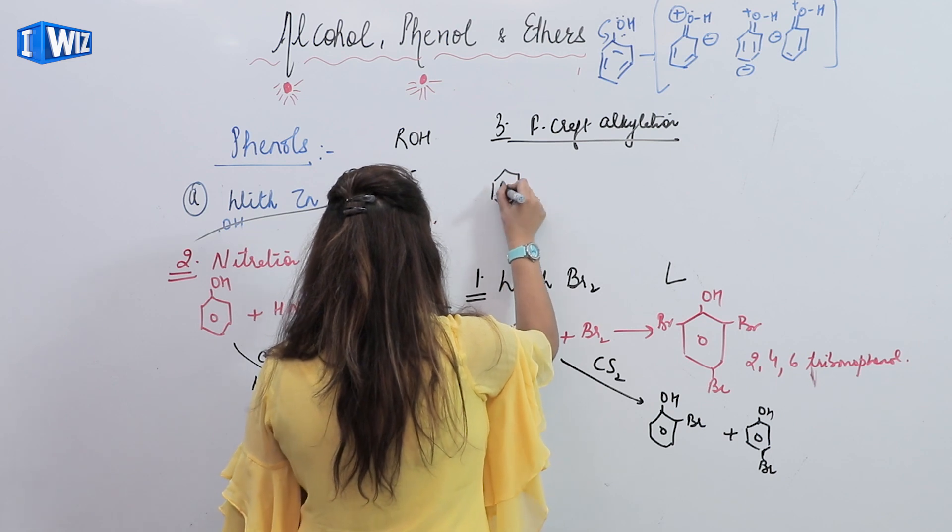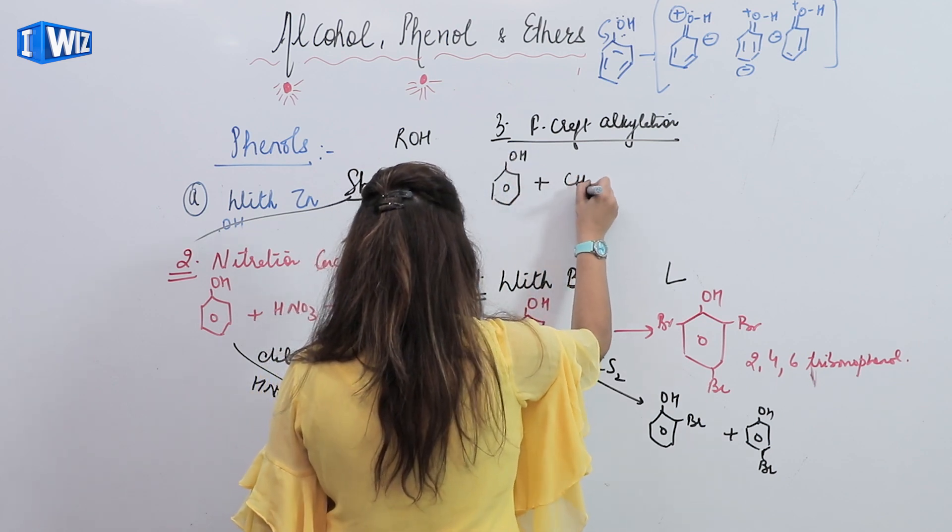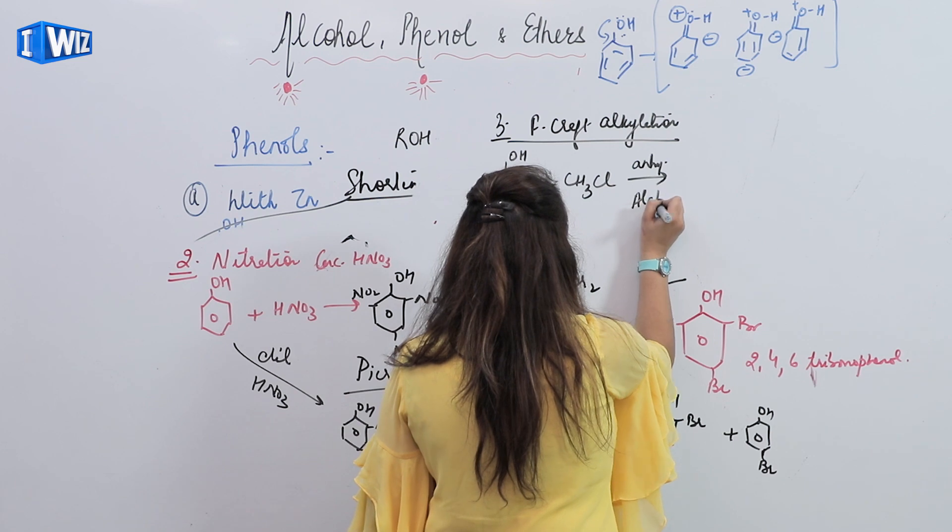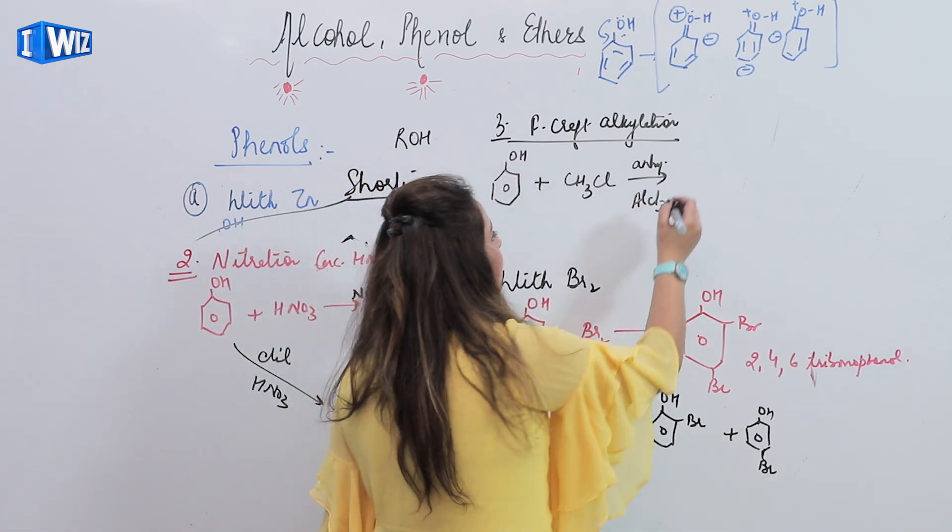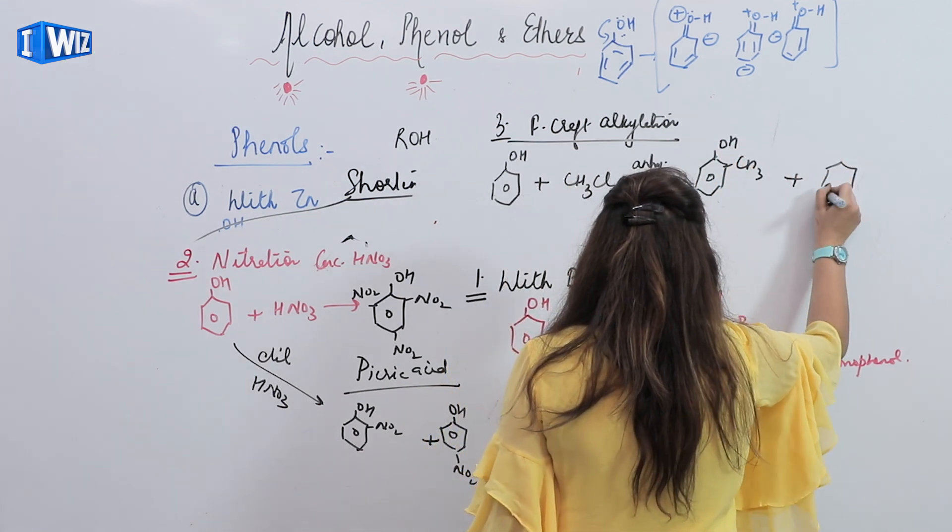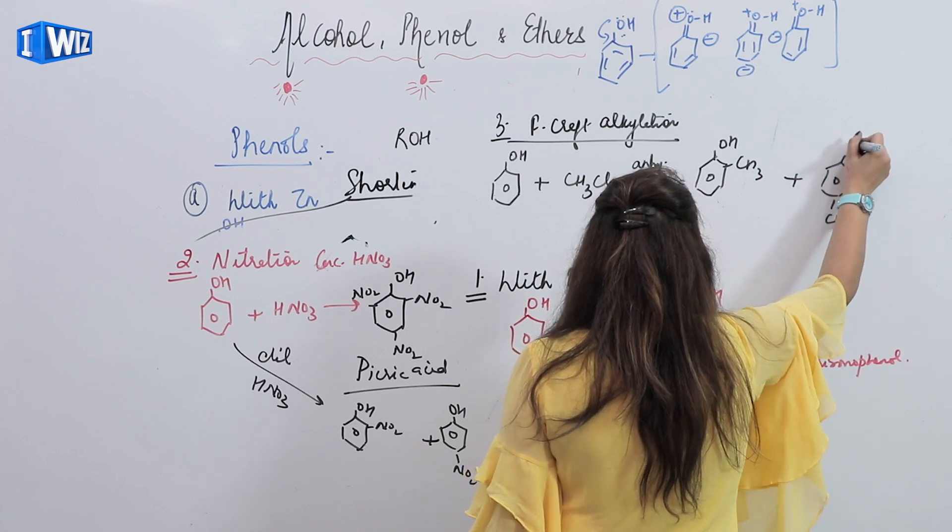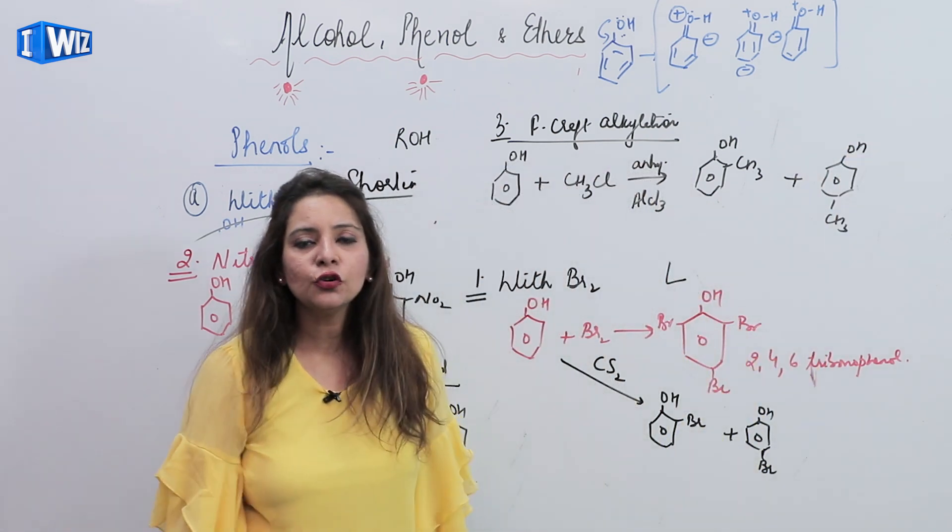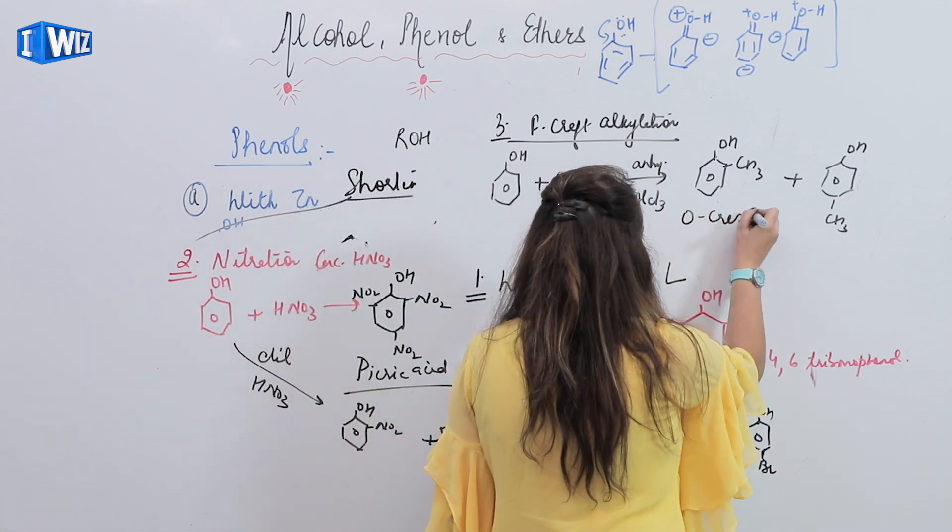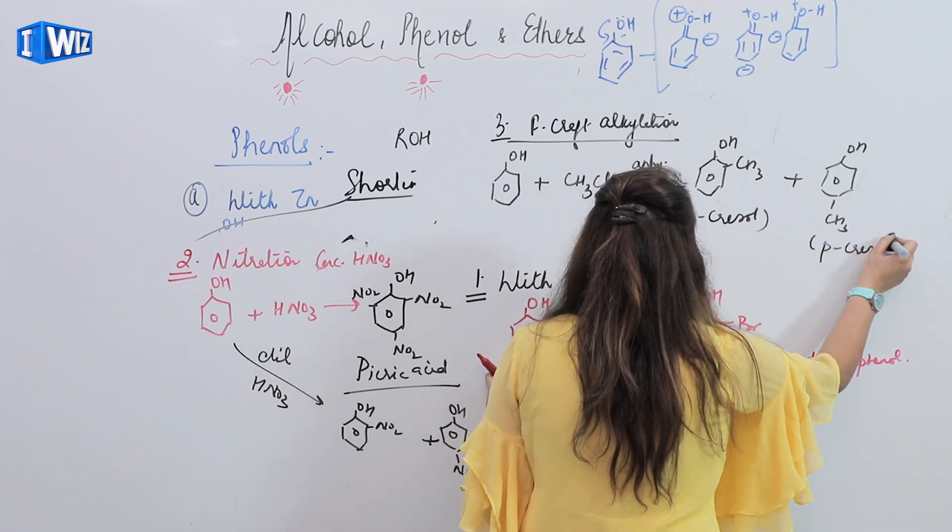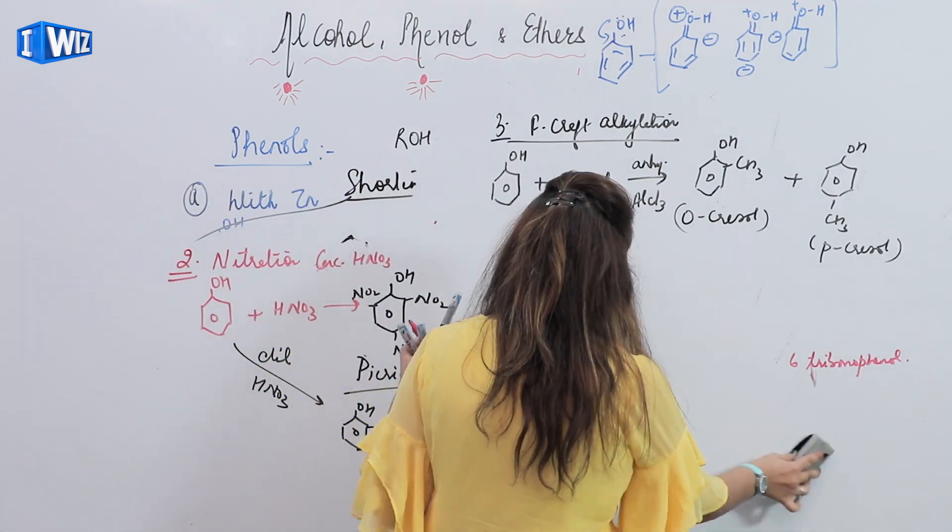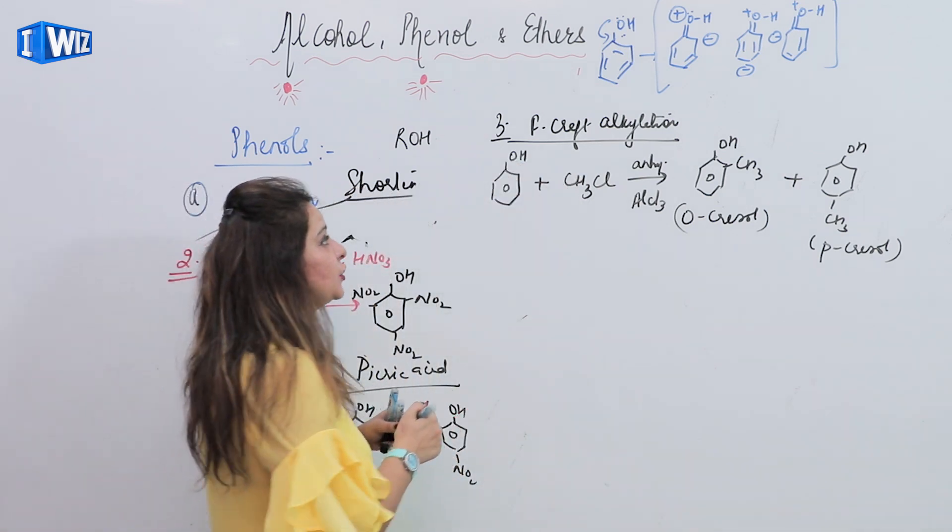Take phenol with methyl chloride under special conditions - anhydrous aluminium chloride. Obviously you will get ortho and para isomers. We can also do sulfonation reaction with chloride.